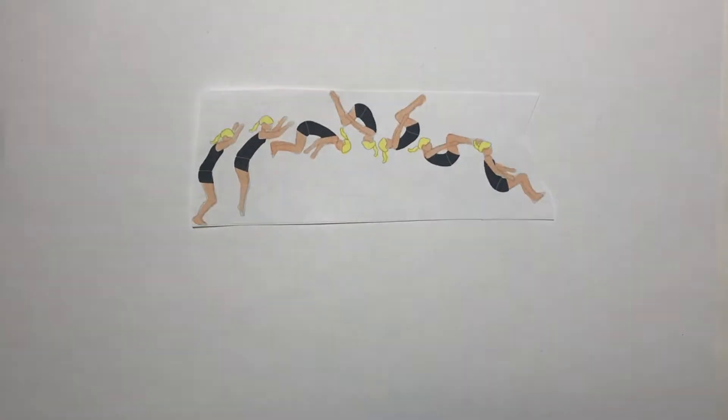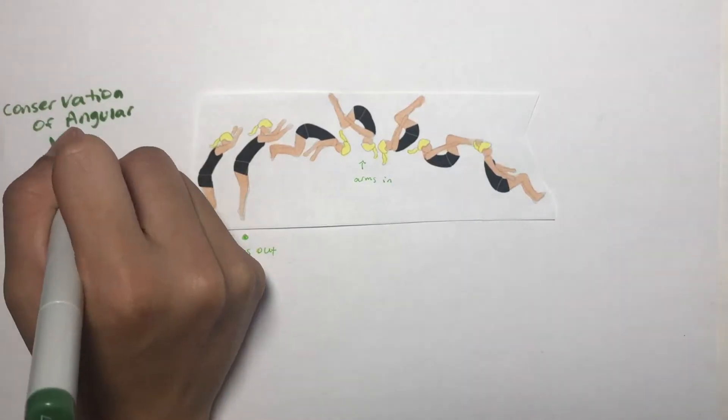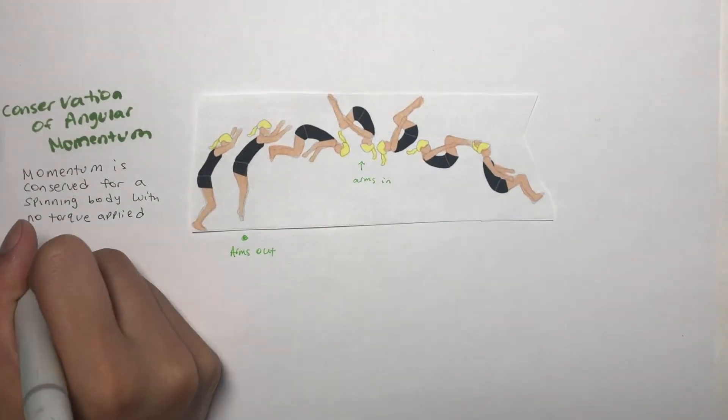For the flip itself, we can look at momentum and dynamics. If you notice, the gymnast pulls her arms in when she flips, making her spin faster. This is due to the conservation of angular momentum. Momentum is conserved for a spinning body with no torque applied.